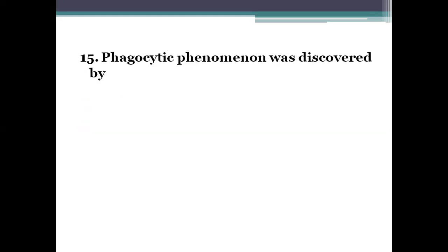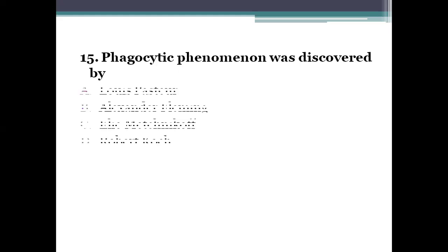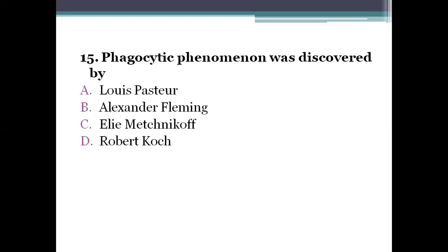Next question: the phagocytic phenomenon was discovered by option A, Louis Pasteur. Option B, Alexander Fleming. Option C, I.I. Mechnikov. Option D, Robert Koch. The right answer is option C, I.I. Mechnikov — he first discovered phagocytosis, which is the engulfment of bacteria by white blood cells.